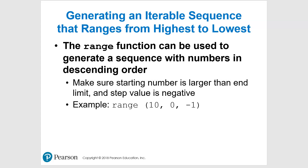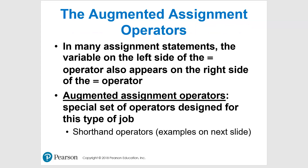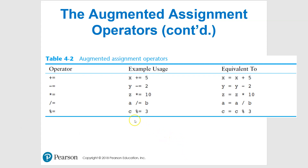The last thing in this section is augmented assignment operators — a shortcut way of doing things. For example, plus equals: x += 5 is the same as x = x + 5. Similarly, y -= 2 is the same as y = y - 2. I keep emphasizing this because I want you to know what it means and get in the habit of using it when you're coding.